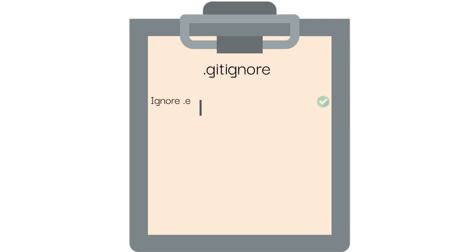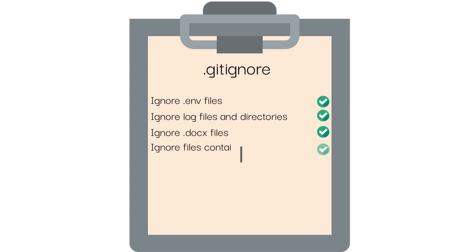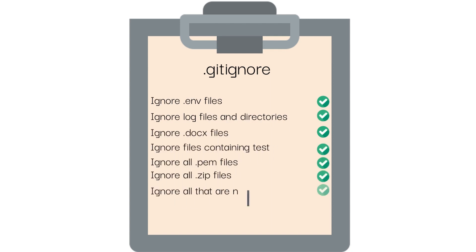Simply put, the .gitignore file is essentially a list of instructions of files, file directories, or types of files that git should ignore. Hence the name .gitignore.